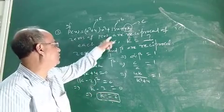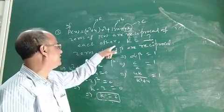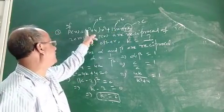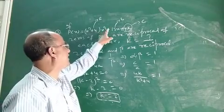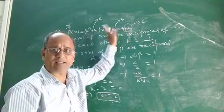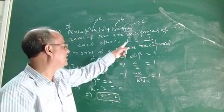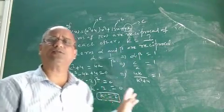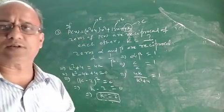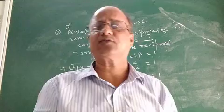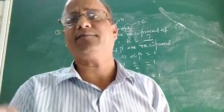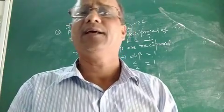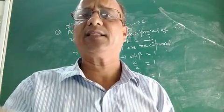So if the two zeros of this quadratic polynomial defined by K squared plus 4 into X squared plus 13X plus 4K are reciprocal of each other, then the value of K is 2. I hope you understood how to solve this type of question. Please hit the like button and subscribe to my channel. We are going to discuss more questions on Polynomials in the next class. Thank you.